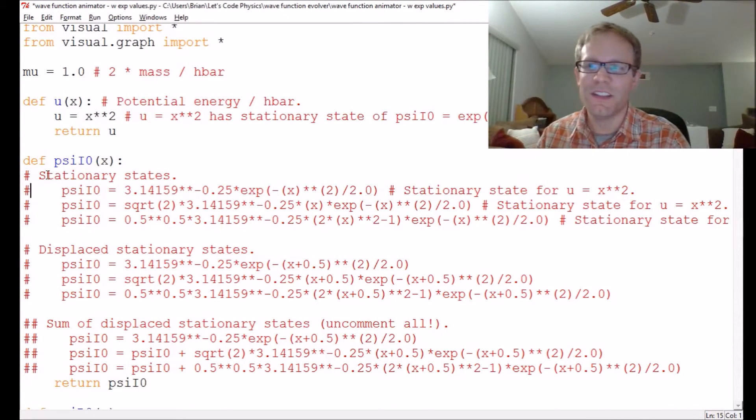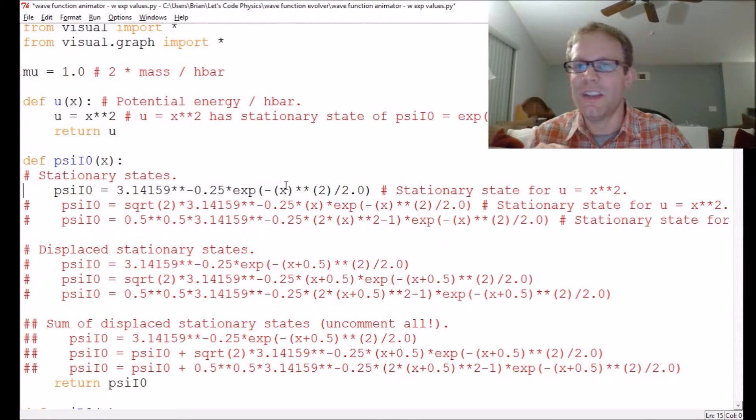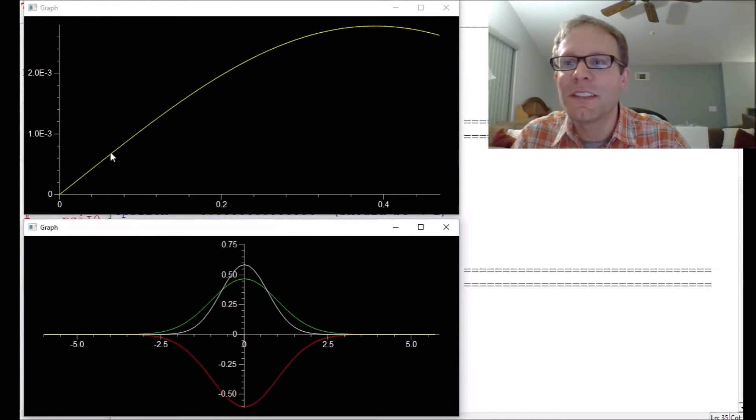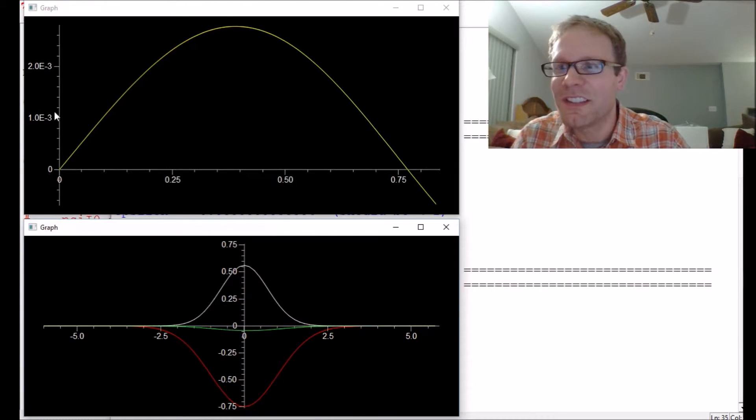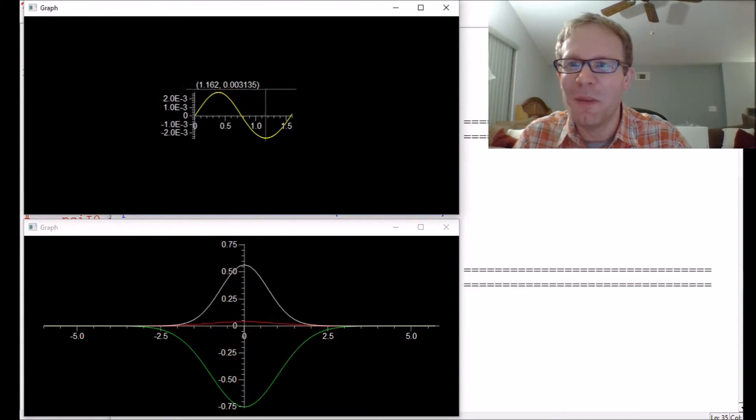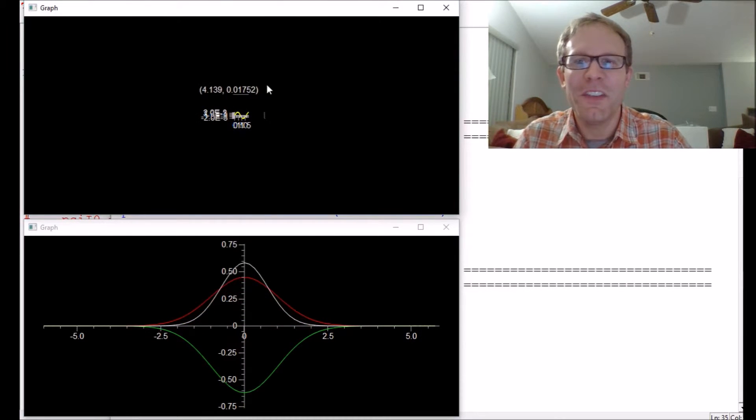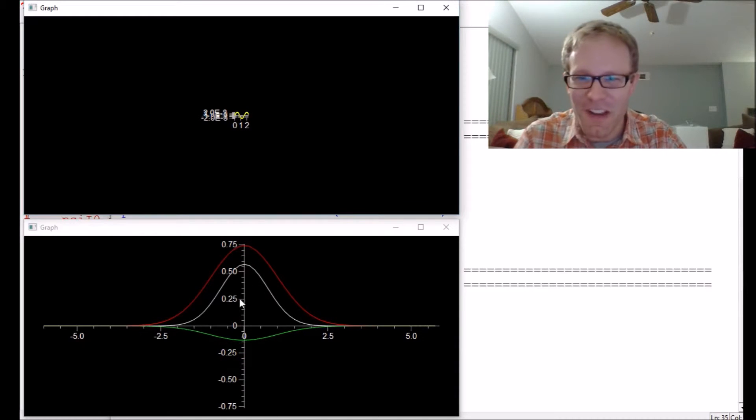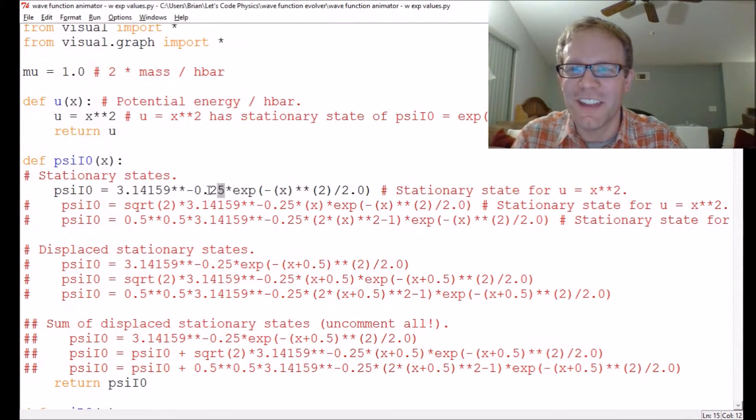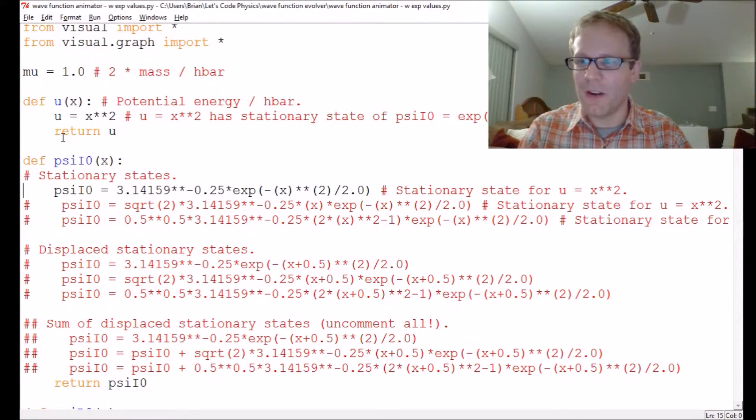I want to show you first why we call these things stationary states to begin with. It's a stationary state if it's a Gaussian that you center around x equals zero. I want you to watch what happens to the expectation value. I know it looks like this expectation value is curving because it is, but look at the scale of this thing. This thing is only moving by one part in a thousand. It's really not moving very much. It's only moving by the error associated with the computer.